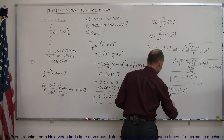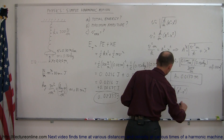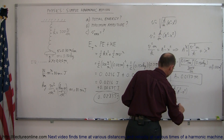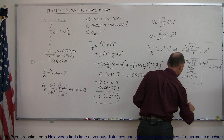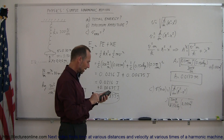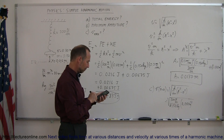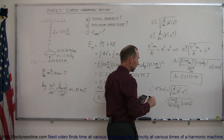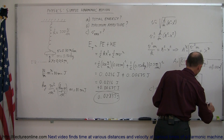Plugging in all values: the square root of k (300 newtons per meter) divided by mass (0.150 kilograms), multiplied by the maximum amplitude (0.0137 meters) squared. We square the amplitude, multiply by 300, divide by 0.15, then take the square root. The maximum velocity is 0.615 meters per second.